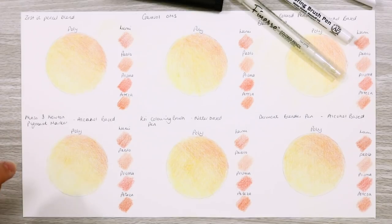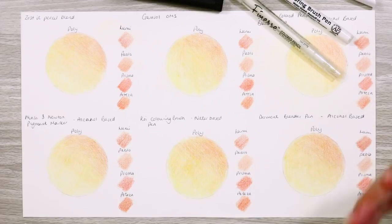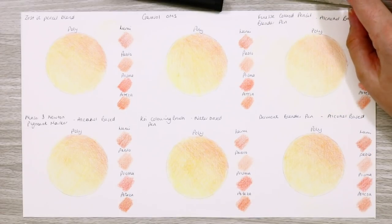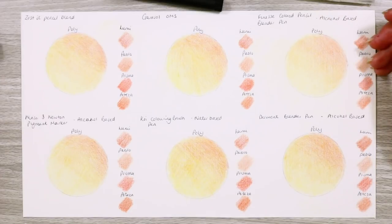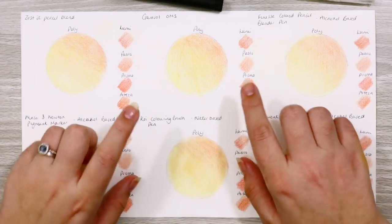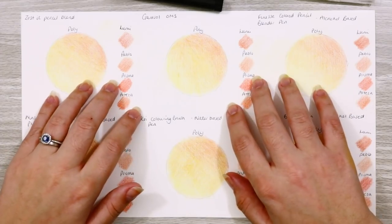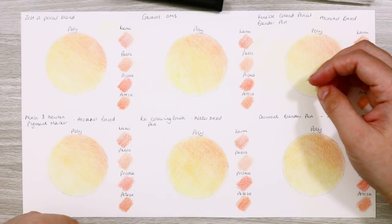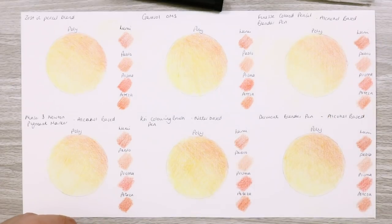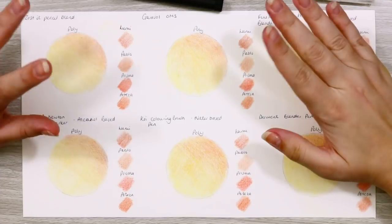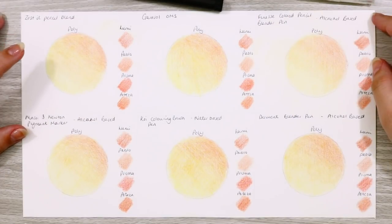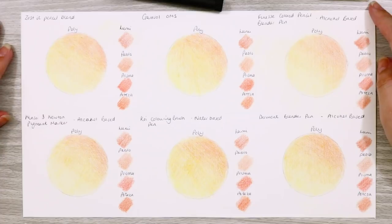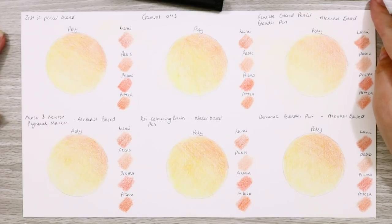Before you add any blender to your work, it's important to make sure you have enough layers of pencil down. If you blend on too few layers, the blender won't be as effective and can often leave you with patchy inconsistent results. As you can see here, I've got six little circles for each different product and I start off by adding a load of layers of pencil down. I like to complete this with the main type of pencil I use, which is the Faber-Castell Polychromos, so I'm adding three different tones gradually getting darker as I head towards the upper right of the circle.